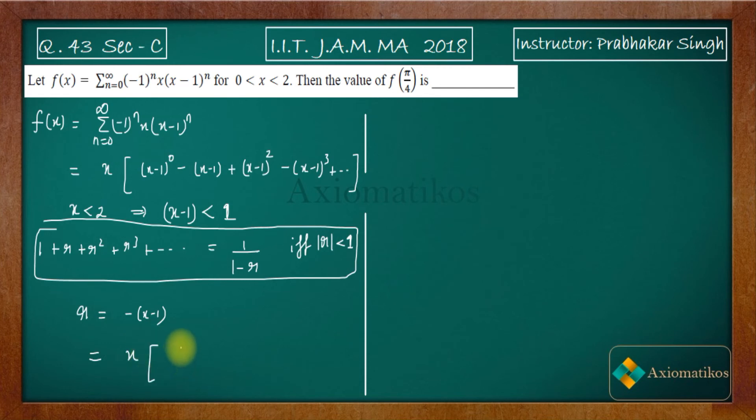So what will be the answer for this geometric progression? It will be 1 by, see this first term is 1 because you are powering it up with 0. 1/(1-r), so you will get 1/(x-(x-1)). So it will be x/x. So this is 1. Everything is fine.